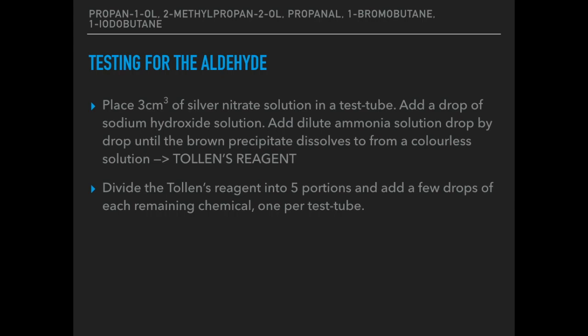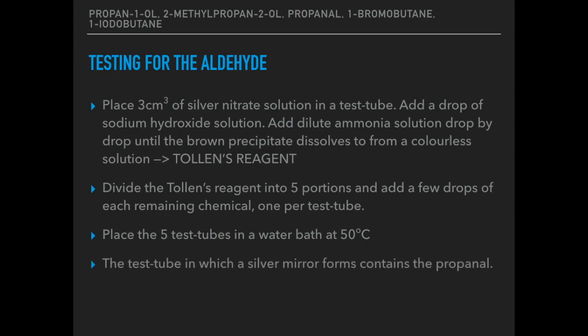Because there are 5 unknowns still to test, we need to divide the Tollens reagent into 5 portions, and add a few drops of each chemical to each of the test tubes — one different chemical per test tube. Place those 5 test tubes in a water bath at 50°C; you just need to get across the idea that it needs to be in hot water. The test tube in which a silver mirror forms must contain the propanal. The propanal is oxidised by the Tollens reagent to propanoic acid, and the silver ions are reduced to silver atoms, forming the silver mirror.